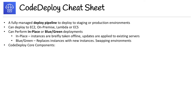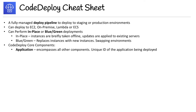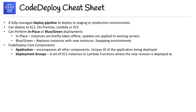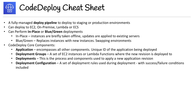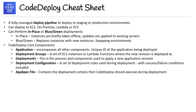Talking about the CodeDeploy core components: we have the Application, which encompasses all other components and has a unique ID of the application being deployed. Deployment Groups is a set of EC2 instances or Lambda functions where the new revision is to be deployed. Then Deployments is the process and components used to apply a new application revision. Deployment Configuration is a set of deployment rules used during deployment with success and failure conditions included.